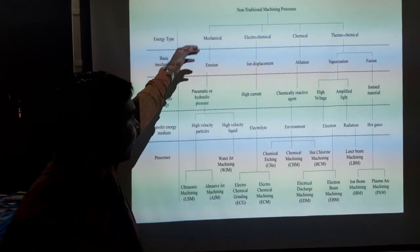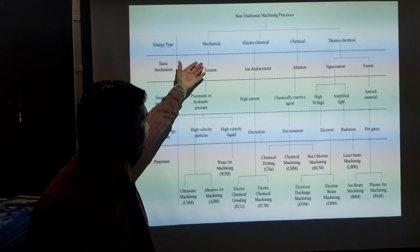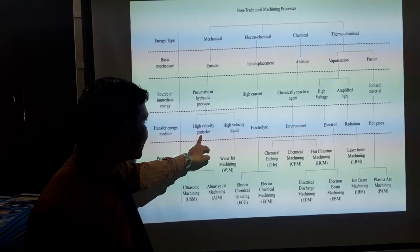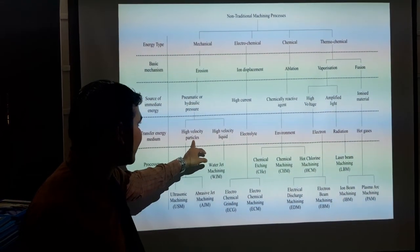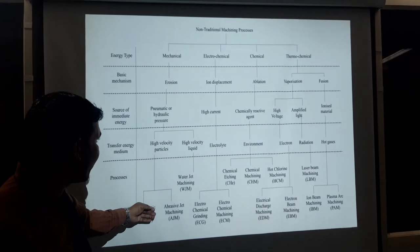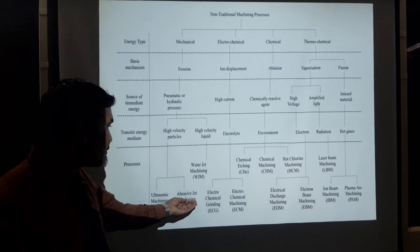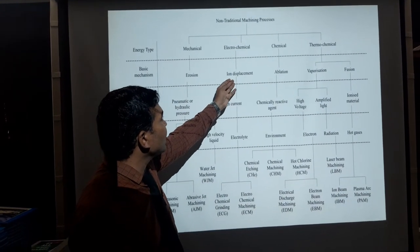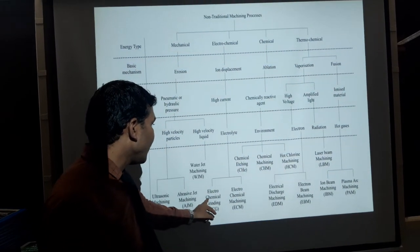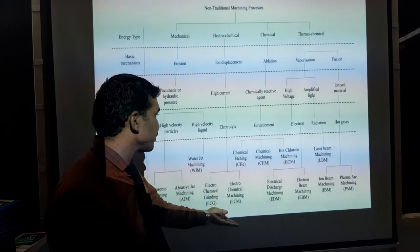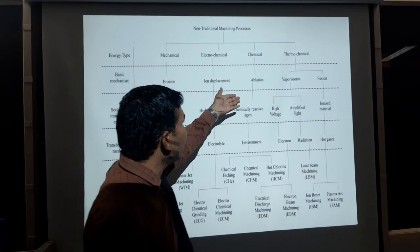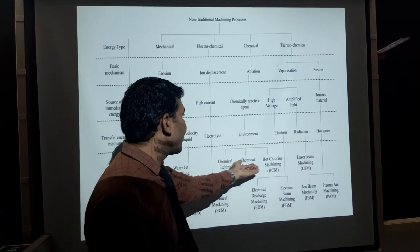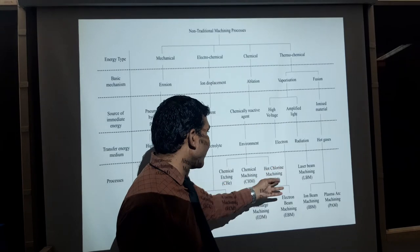Examples: Mechanical - erosion using pneumatic air or hydraulic pressure, divided into two categories: high-velocity particles (ultrasonic machining or abrasive jet machining) and high-velocity liquid (water jet machining). Electrochemical - ion displacement using high current electrolyte: electrochemical grinding or electrochemical machining. Chemical processing - ablation using chemical reactive agents such as acid, with three categories: chemical milling, chemical machining, and chemical chloride machining. Thermochemical process has two categories: vaporization process (using high-voltage amplified light) and fusion process (using ion energy material - electron beam, radiation) including electrical discharge machining and electron beam machining. Laser beam machining uses amplified light. Ion beam machining and plasma arc machining use hot ionized gases.